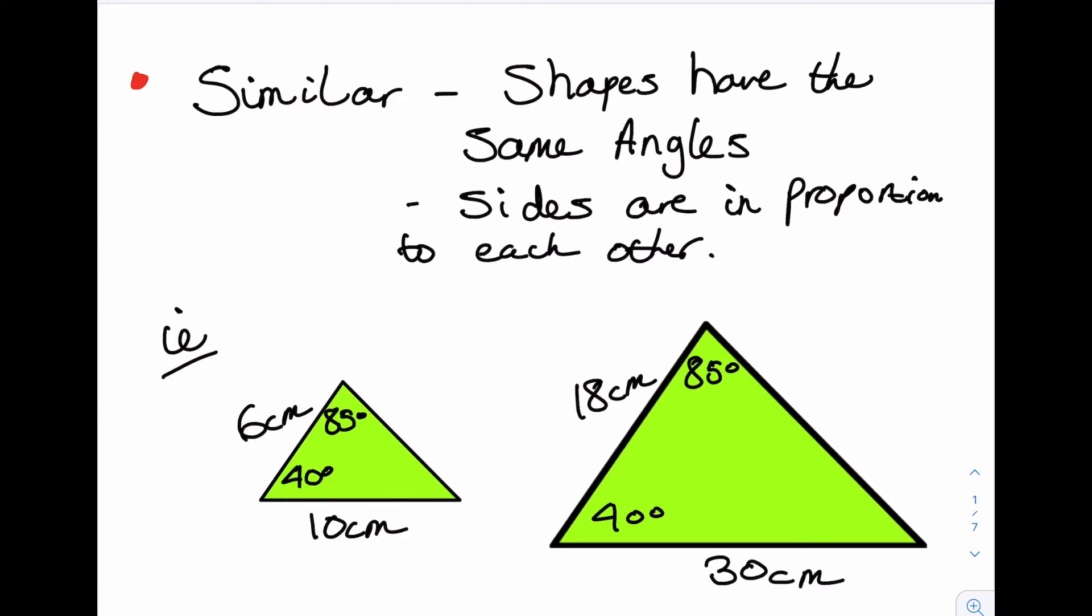So I'll look at an example here, notice I've drawn two triangles. Now since this angle is the same as that angle and this angle is the same as that angle, because angles in a triangle add up to 180, these two angles also must be the same.